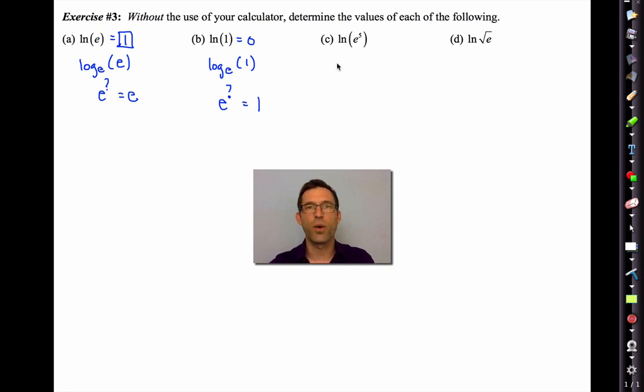But then they start to get actually quite easy. Right here, I'm looking for log base e of e to the 5th. Well, that would just be 5. These two cancel, but also just what do I raise e to to get e to the 5th? It's 5. And finally, the log base e of the square root of e. Well, it would be 1 half. And the reason is that the square root of e is the same as e to the 1 half. What do I have to raise e to to get e to the 1 half? Well, 1 half.